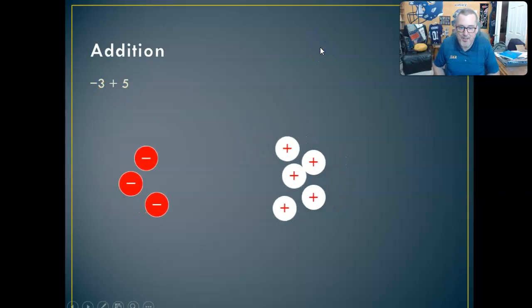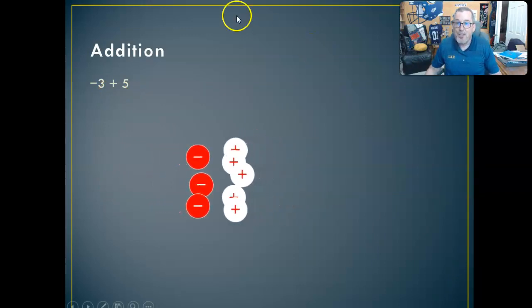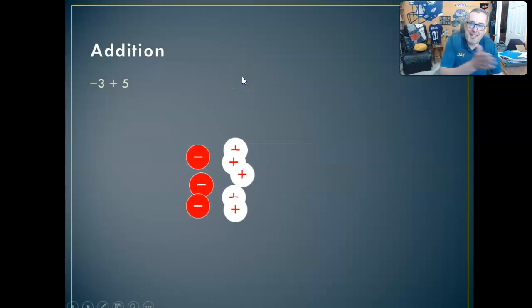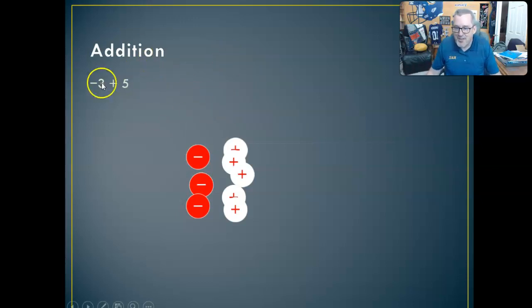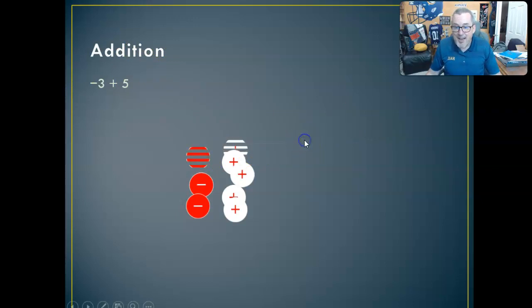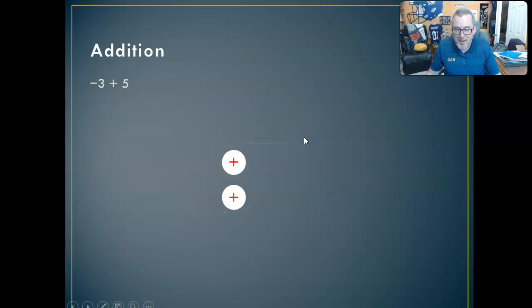Push them together. Now what do you have? This is where the whole zero pairs concept has to have happened. Imagine students in a classroom actively engaged in this — they push the chips together and they can see: that's a zero pair, that's a zero pair, that's a zero pair. And when you take out the zero pairs, what remains? Two positives.